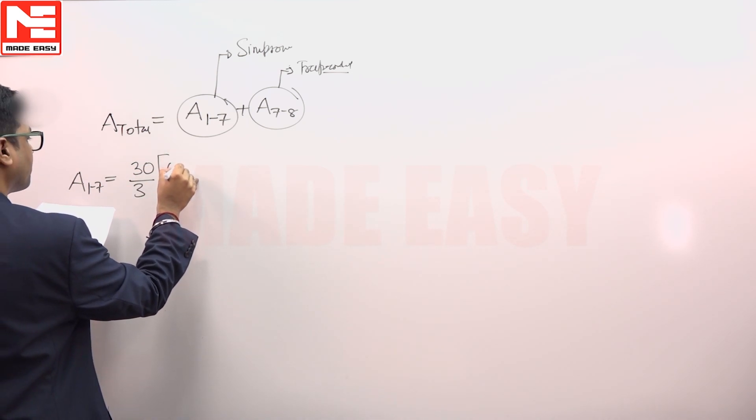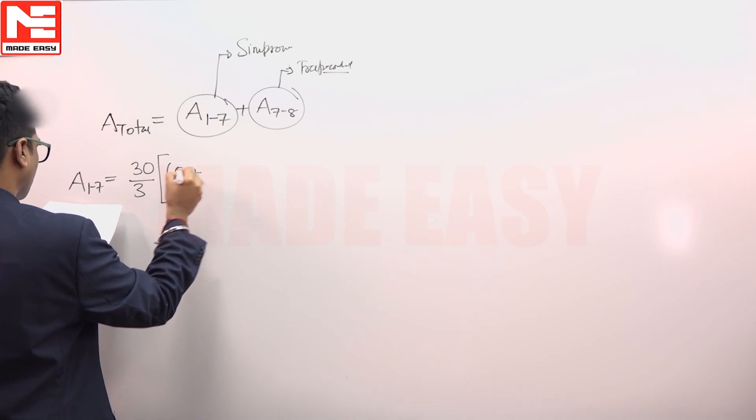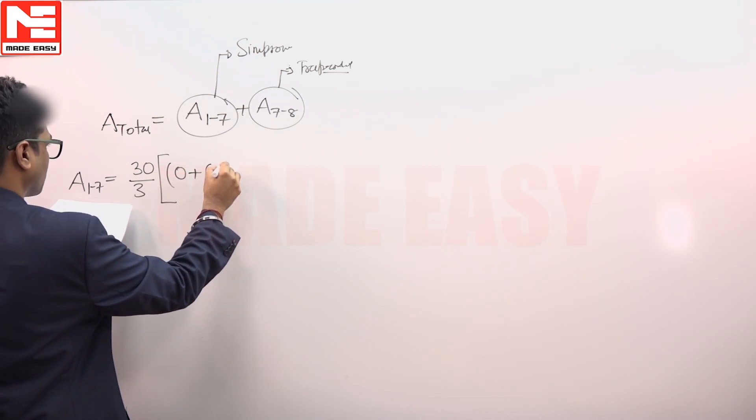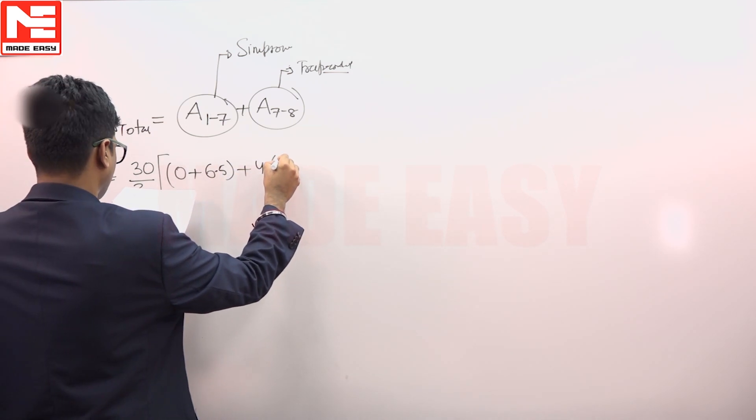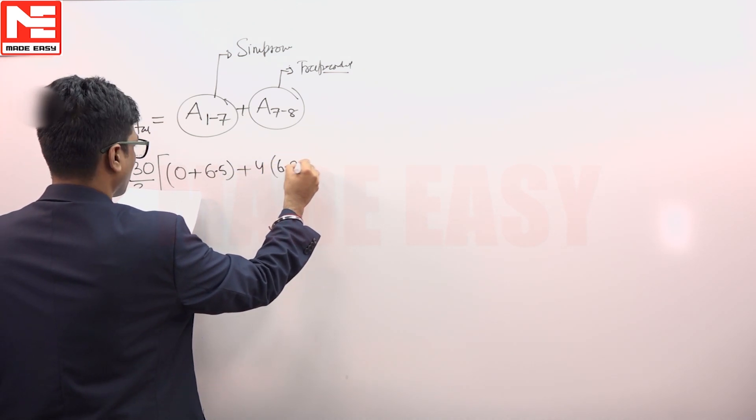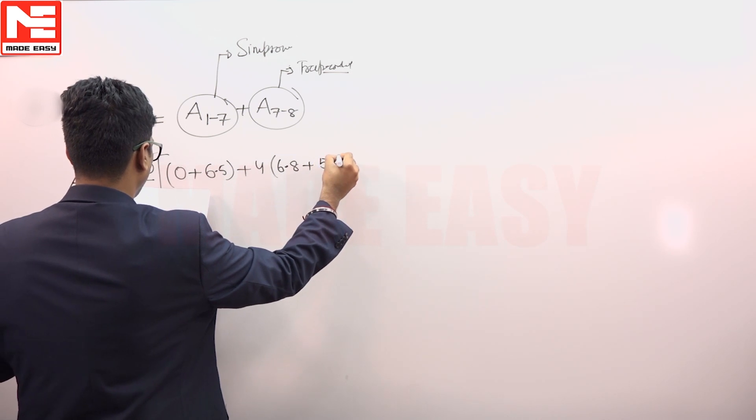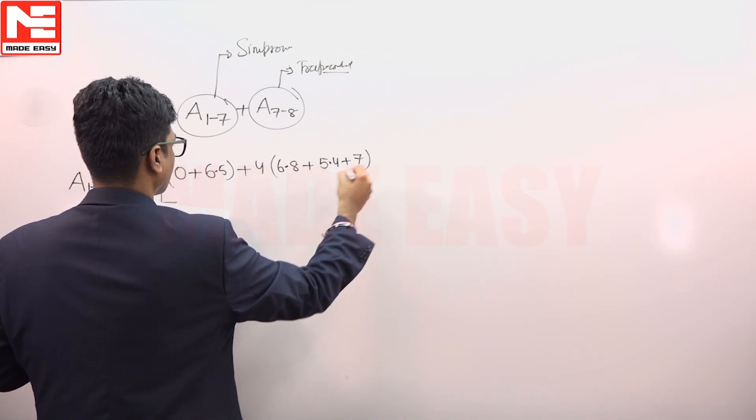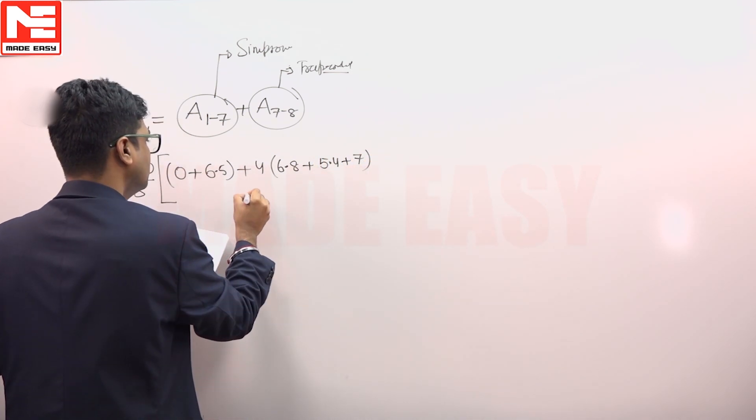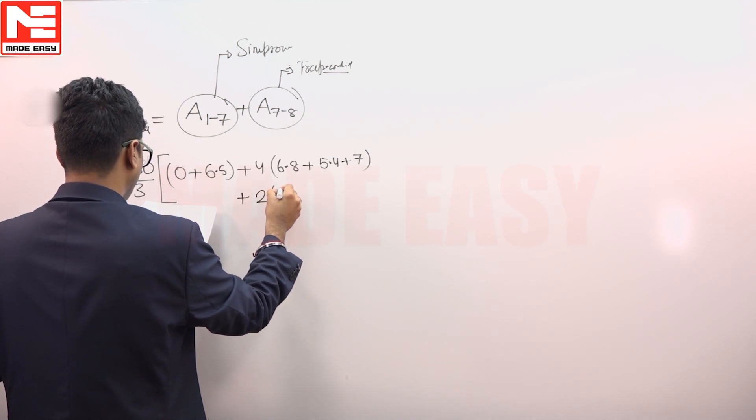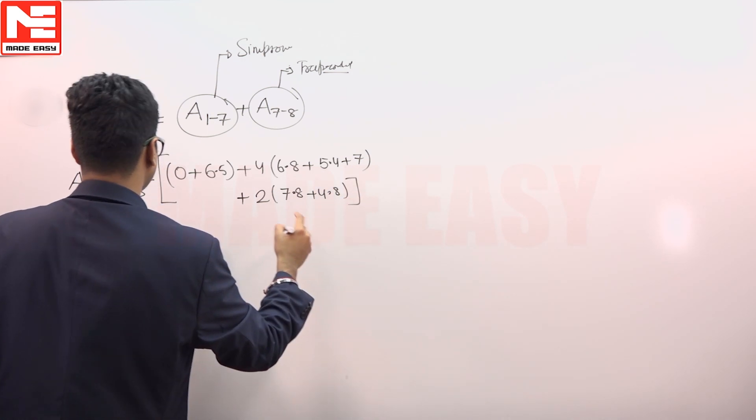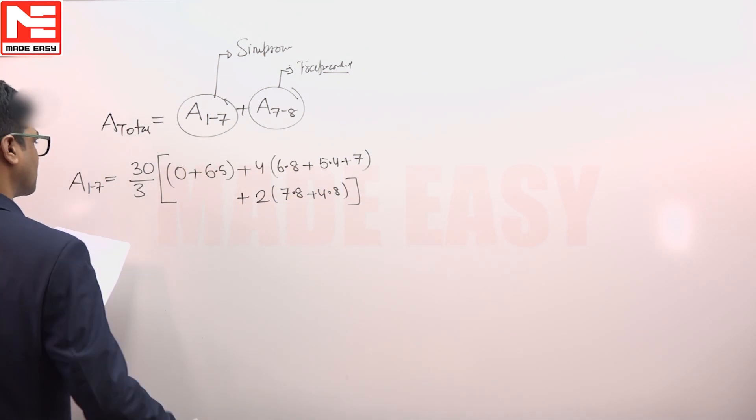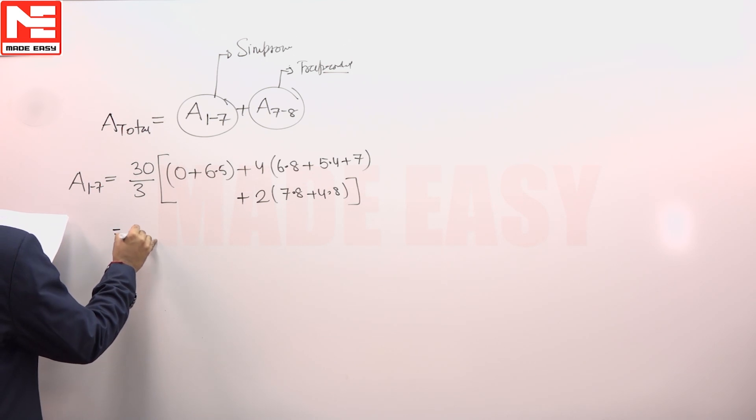First offset as 0 plus the last offset 6.5, plus 4 into all even offsets, and that is 6.8 plus 5.4 plus 7, and plus 2 into odd offsets 7.8 plus 4.8. This is up to 7th offset only. This is 1085 meter square area.